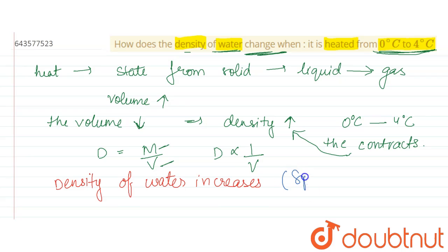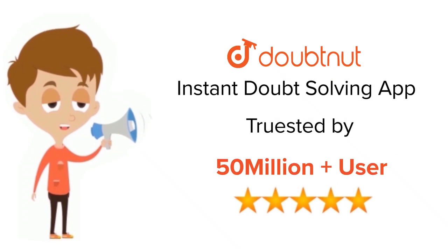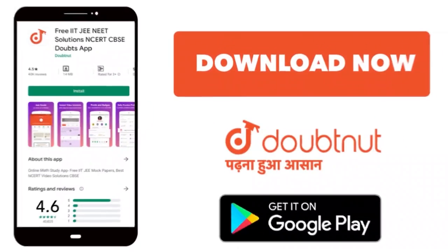Since it is a special case, generally the density decreases. Thank you. For class 6 to 12, IIT-JEE and NEET level, trusted by more than 5 crore students. Download Doubtnet app today.